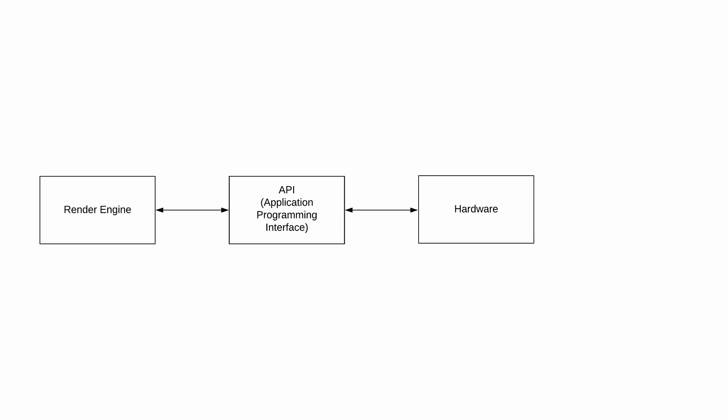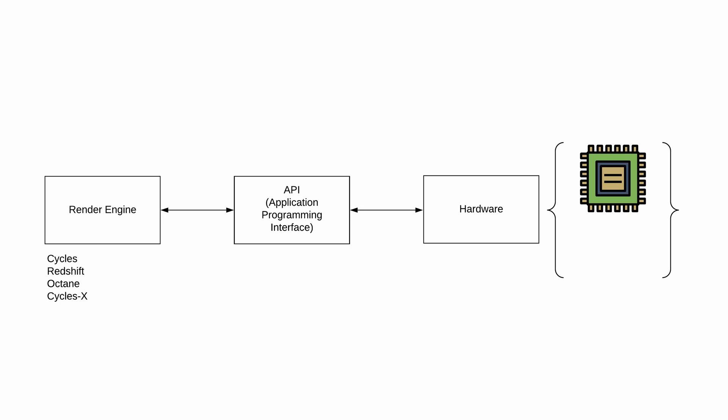The render engine could be, for example, Cycles, Redshift, Octane, or the newly released Cycles X — which of course depends on which 3D modeling software you are using. The hardware could be a CPU or a GPU. Mostly nowadays GPUs are being used because they are a lot quicker for parallel computing, and as you probably know, almost all desktop GPUs come from either AMD or NVIDIA.